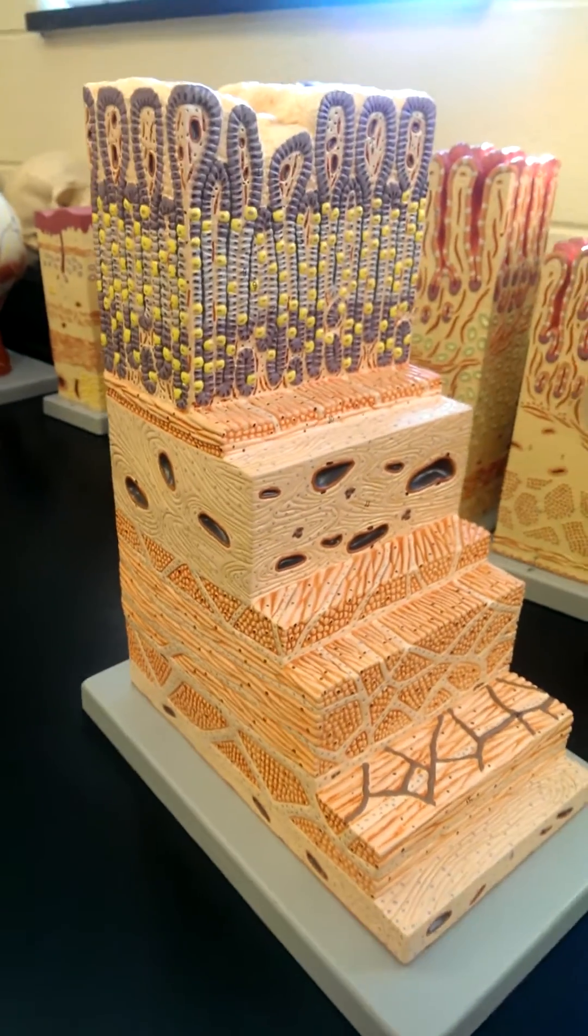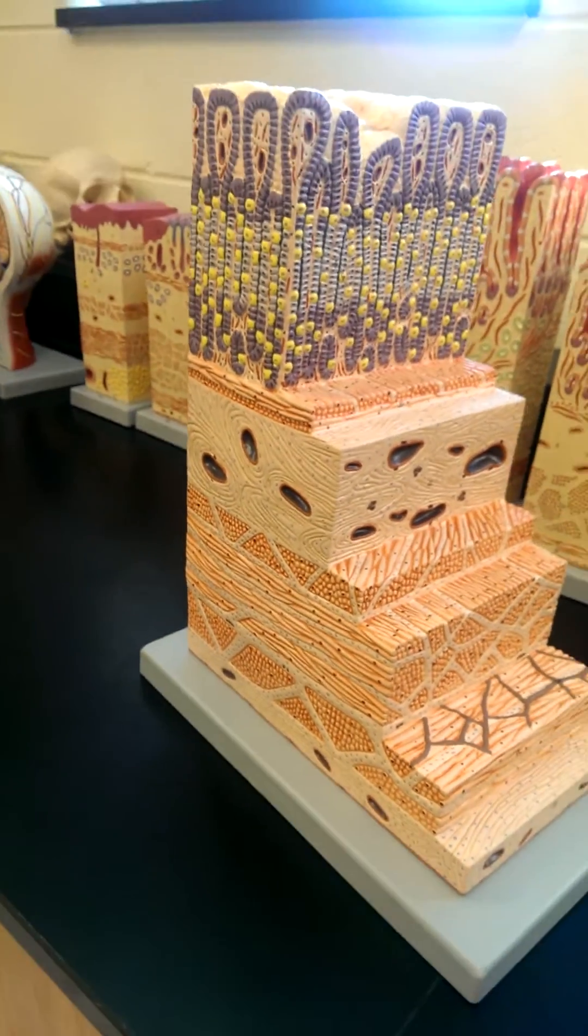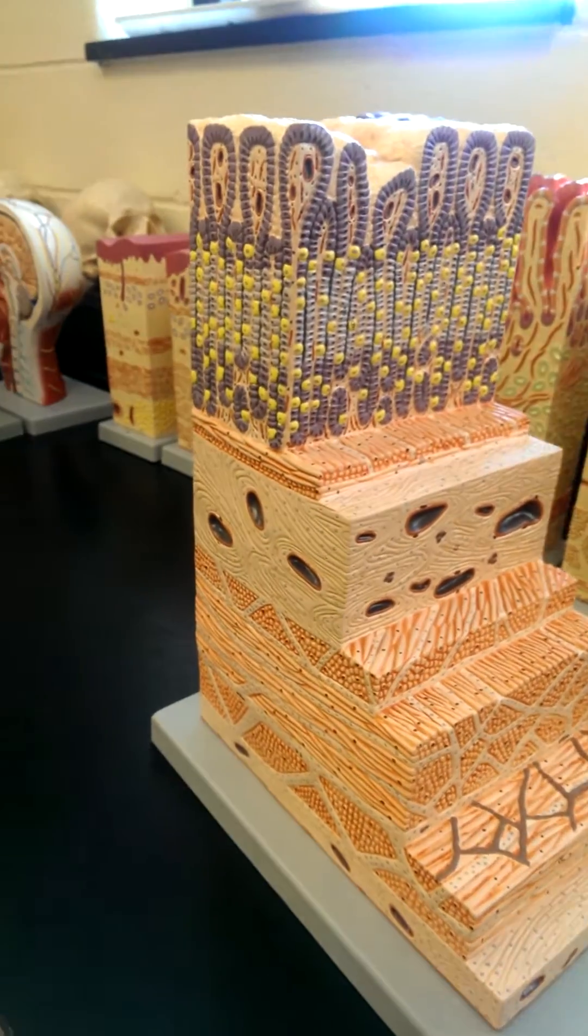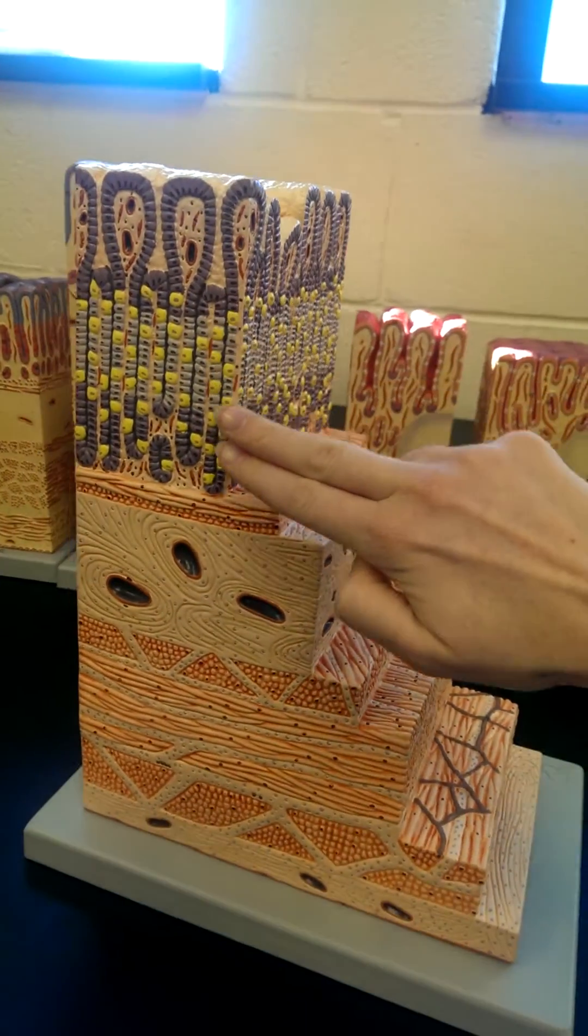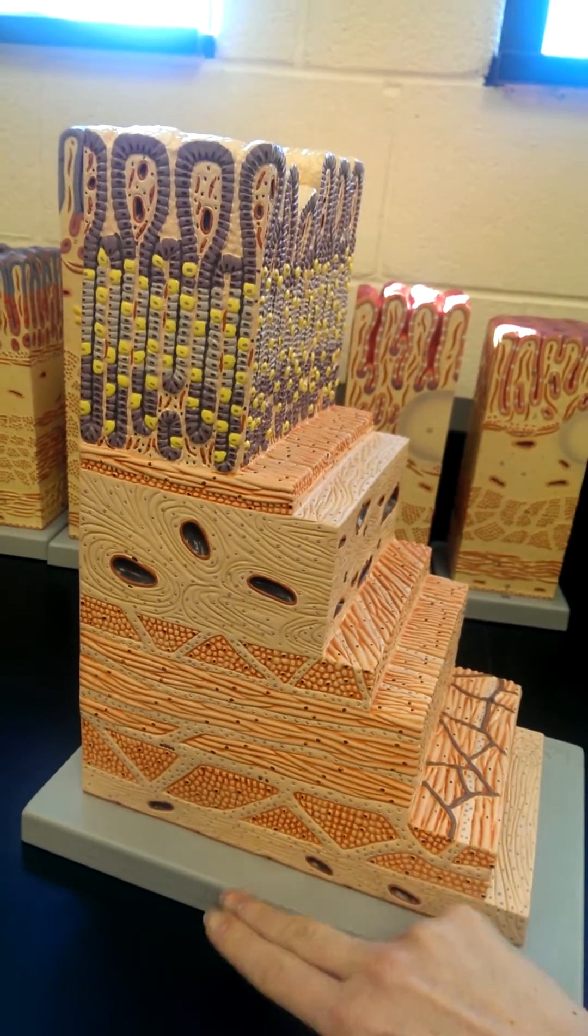We have here our stomach model. This is a model that is showing the wall of the stomach. Our food would be sitting up in this space here. This would be the lumen, and then we're moving through the wall of the stomach to the outside.